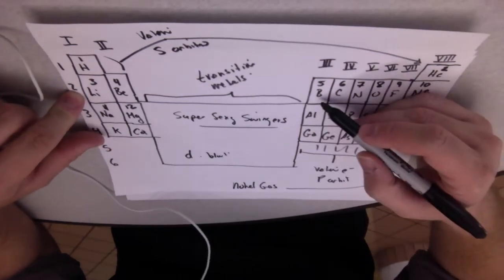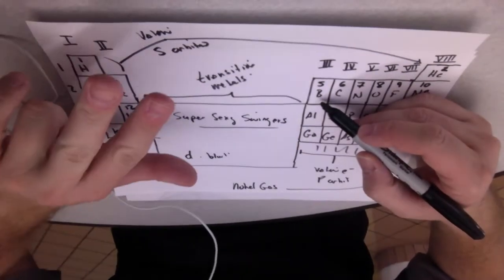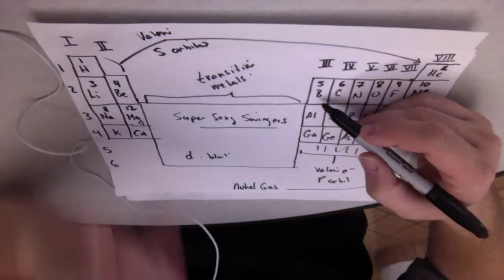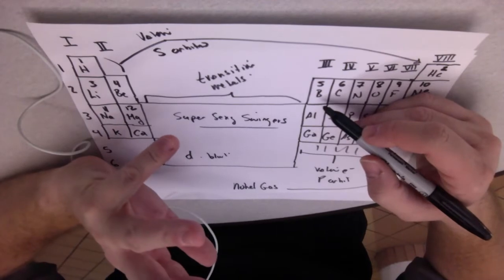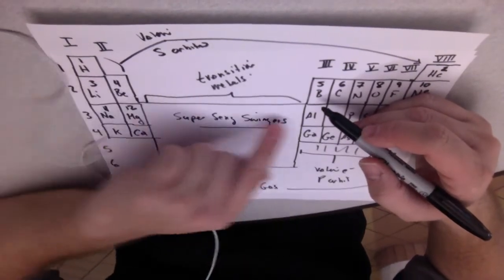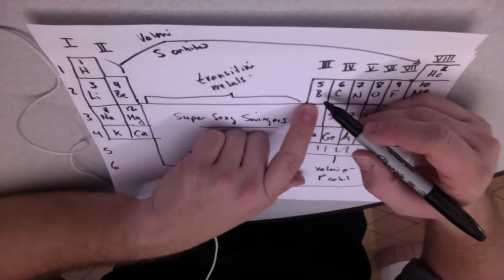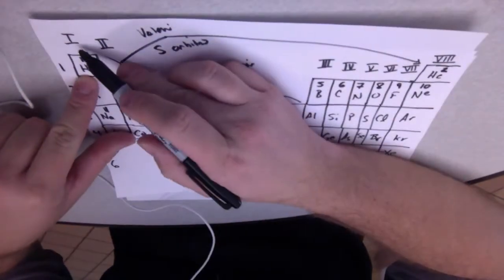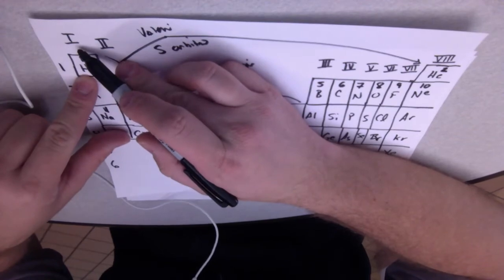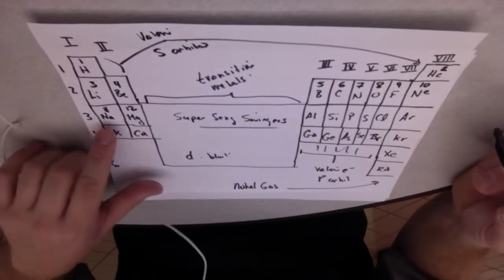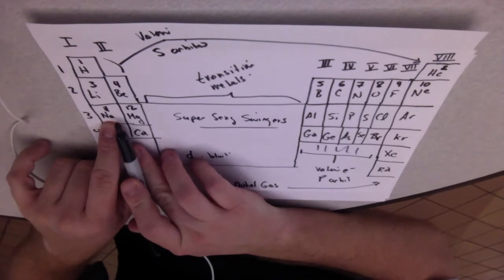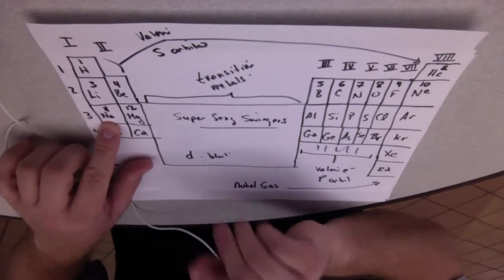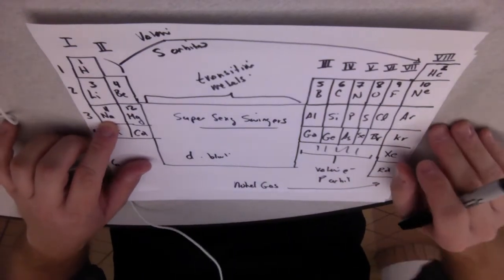For example, if we look at boron, boron's in the second period, so there are two levels of energy, and it is in group three, which means that three electrons are in the outer energy level, or in the valence. If we look at hydrogen, hydrogen has the first energy level, and it only has one electron in its valence shell. If you go down to sodium, it has three energy levels, but only one electron is in the outermost energy level, or what we call the valence shell.